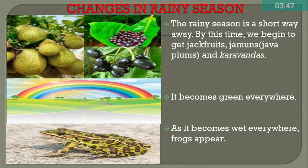Changes in rainy season: the rainy season is a short way away. By this time, we begin to get jackfruits, jamuns, and karwanda. It becomes green everywhere. As it becomes wet everywhere, frogs appear. Thank you.